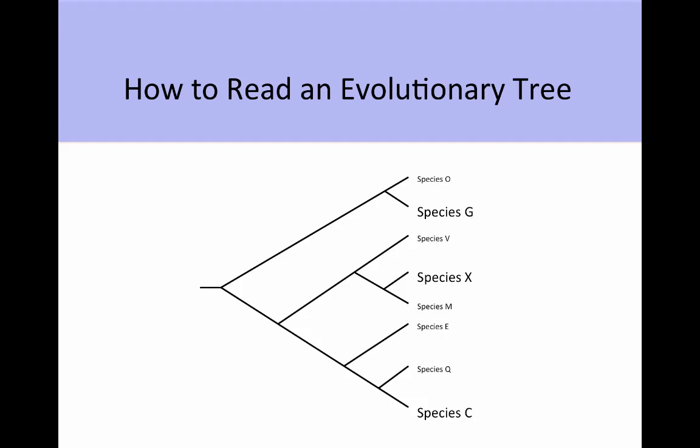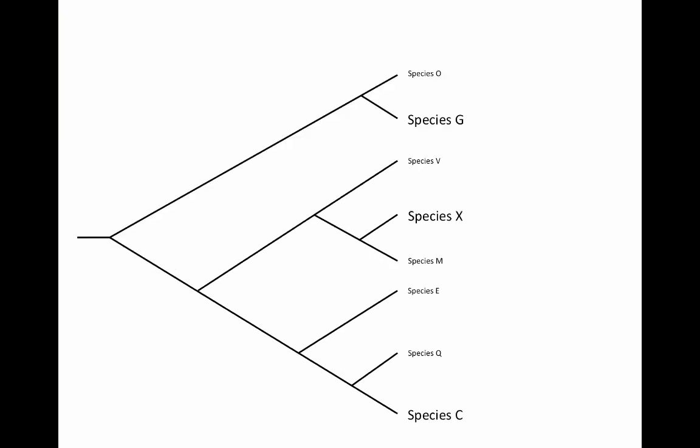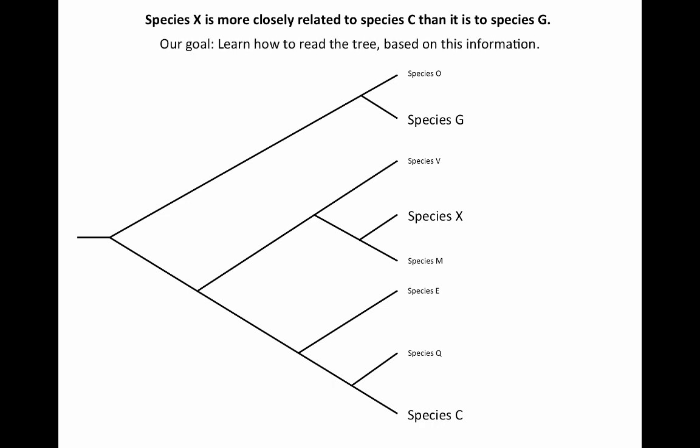Suppose that your instructor gave you this evolutionary tree shown here and all that she told you was that species X is more closely related to species C than it is to species G. Based upon this information you are told that you need to learn how to read these evolutionary trees. It sounds like a little bit of an intimidating task, but I think together we can do this.